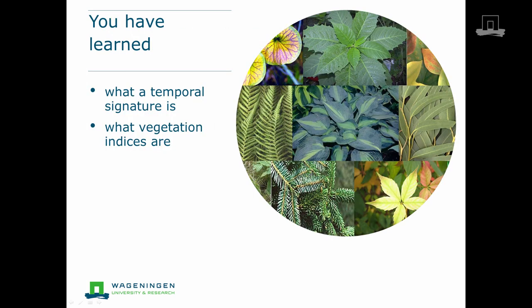In this clip you have learned what a temporal signature is and how variations in soil background can disturb a smooth temporal signature in red and near infrared spectral bands. Subsequently, correction for these disturbances by using so-called vegetation indices is explained, in order to give more accurate information on vegetation itself.